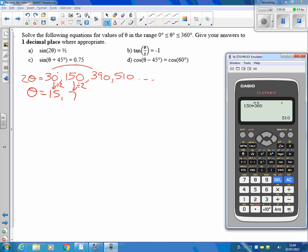Dividing each of these by 2 would give me each of the answers that I'm looking for: 15, 75, 195, and 255. There's 4 answers there in the range, because usually in a normal range, 0 to 360, there are double that number of answers that you've got there.